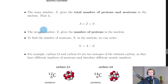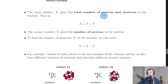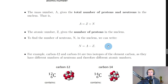The atomic number Z gives the number of protons in the nucleus only. So the mass number A is the total number of protons and neutrons, whereas the atomic number Z is the number of protons only.